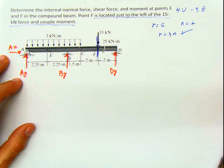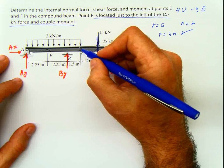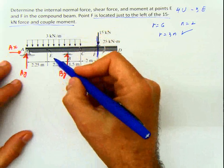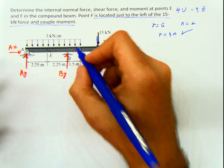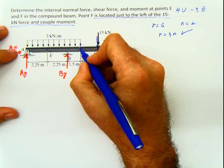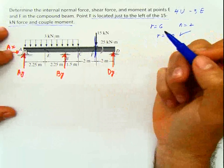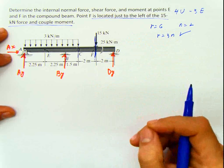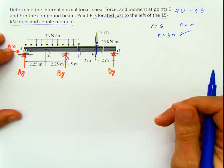How can we do that? Because we have a hinge. When we make a section in the previous examples, we always have an axial force, shear, and moment as internal forces. But if I have a hinge and I make a section at that hinge, there's no moment there because it's a hinge. That provides a huge piece of information that is going to allow me to solve the problem.